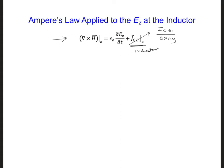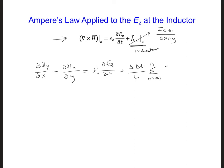On the left side, we have the same thing as before. From the curl of H, we take the z component. Then we have epsilon naught d ez dt. And here we'll have delta times delta t over L, and the summation m equal 1 to n of ez m. Now if we apply central differencing, we're going to get on the left side the same as before, and the e component is also going to be the same as before when we wrote it out for the capacitor.